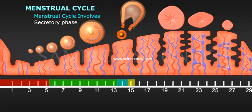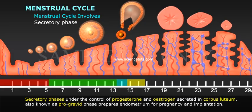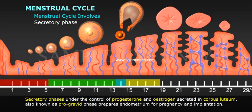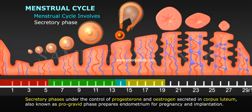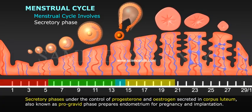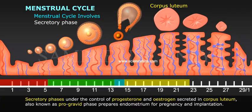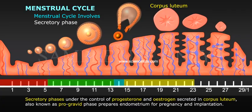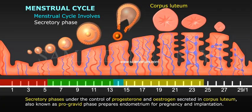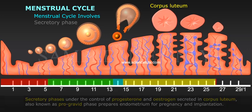Secretory phase: The secretory phase is under the control of progesterone and estrogen secreted by the corpus luteum. Also known as the progestative phase, it prepares the endometrium for pregnancy and implantation.